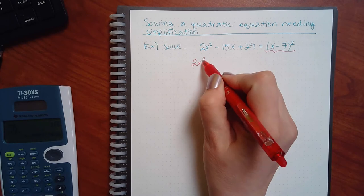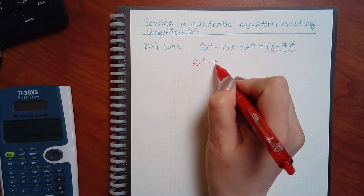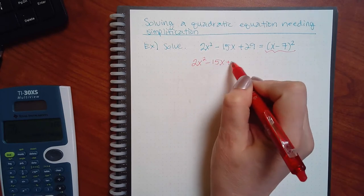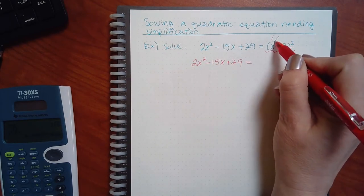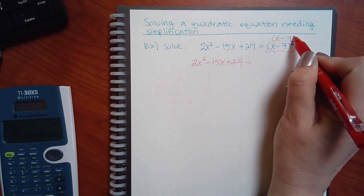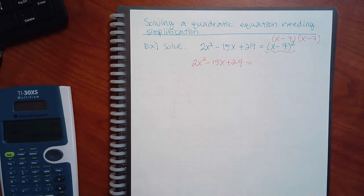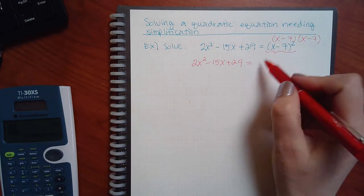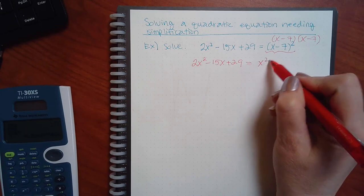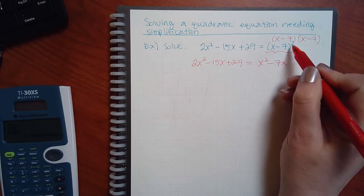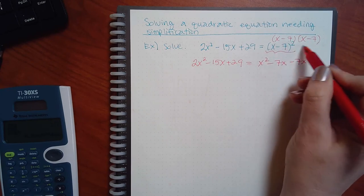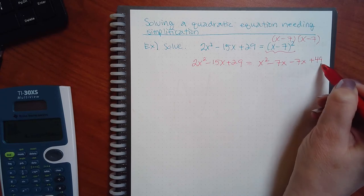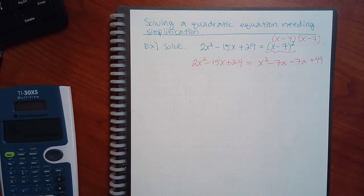So let's figure out what that is. It means it's an (x − 7) times another (x − 7), doesn't it? So let's FOIL that out. I get x² − 7x − 7x + 49.